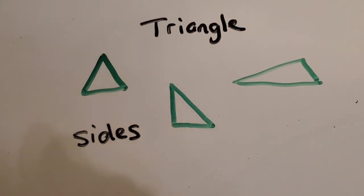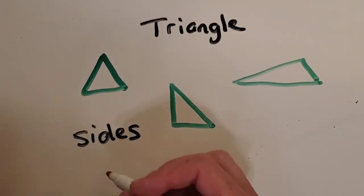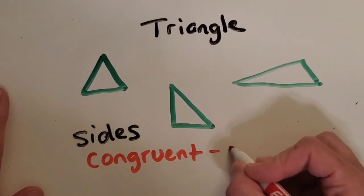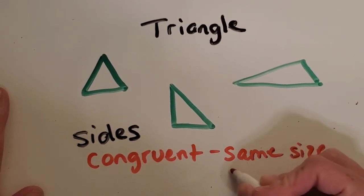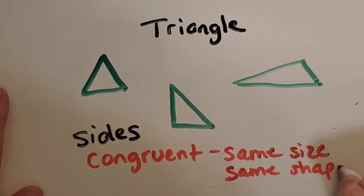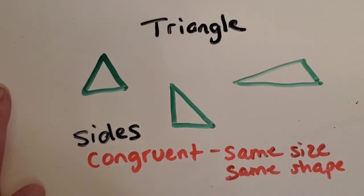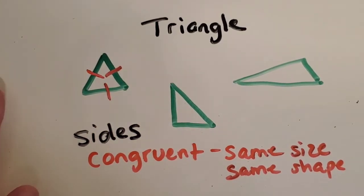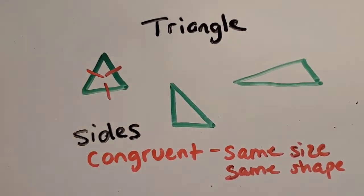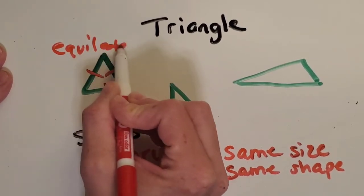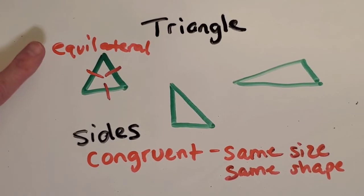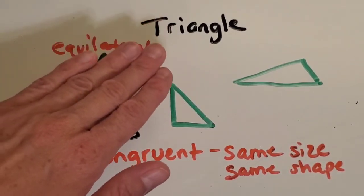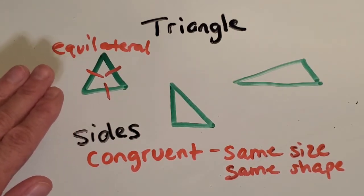When talking about sides, we're going to look at how many of the sides are congruent. Congruent means same size, same shape — for lines, it just means the same length. This first triangle has all sides that look equal or congruent, so it has a special name: it's called an equilateral triangle. You might be able to guess how we'll show this in a hierarchy, because 'triangle' is a broad general term, but 'equilateral triangle' is a lot more specific.